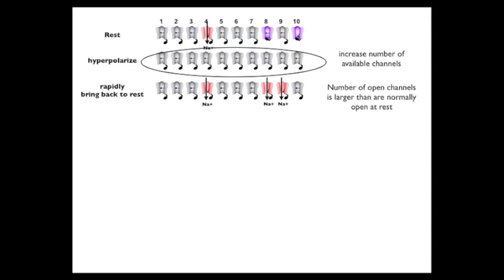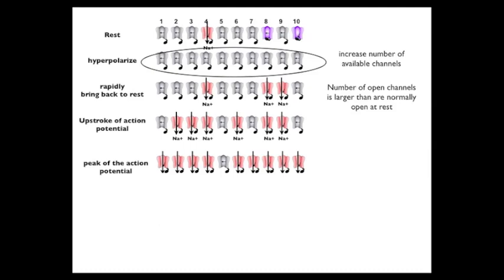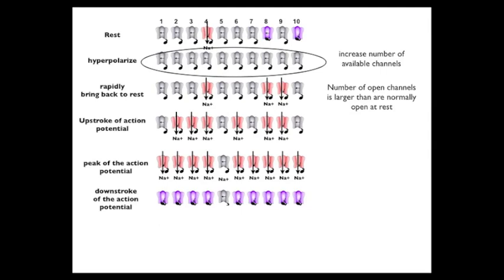The increased number of open sodium channels allows a sufficient influx of positive current carried by incoming sodium ions to open even more sodium channels, thereby generating the upstroke of the action potential. The system goes into positive feedback whereby the increased number of open sodium channels brings in even more positive charges that open even more sodium channels, culminating at the peak of the action potential. A moment later, all the sodium channels inactivate, which together with the now-open potassium channels causes the downstroke of the action potential, and the membrane then reverts back to its resting state.